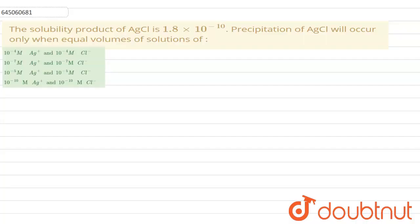Hello everyone, in this question, solubility product of AgCl is given as 1.8×10^-10 and we have to find out in which of the following solution precipitation of AgCl will occur when equal volume of solution is mixed.